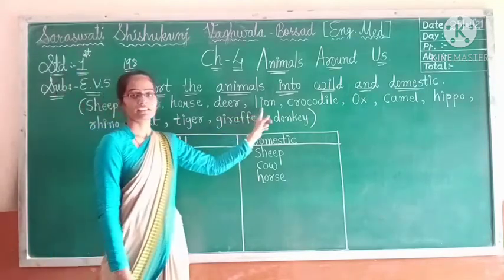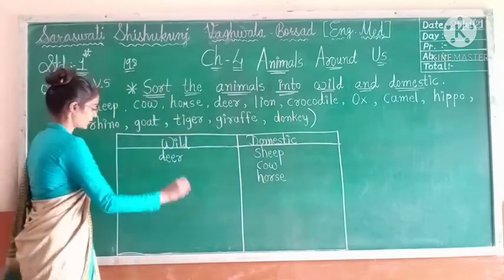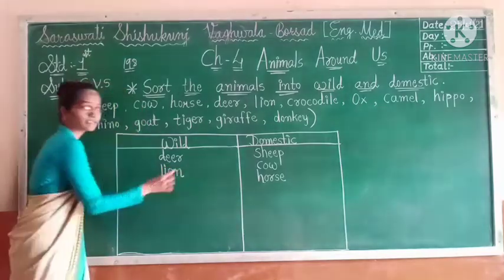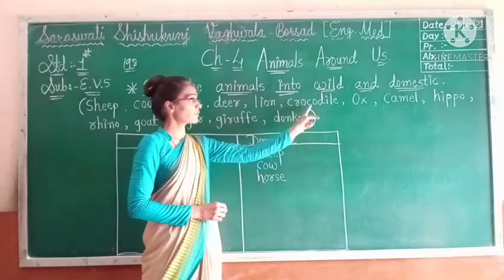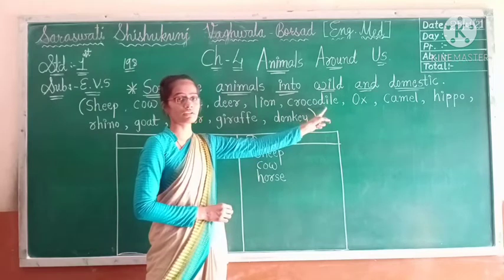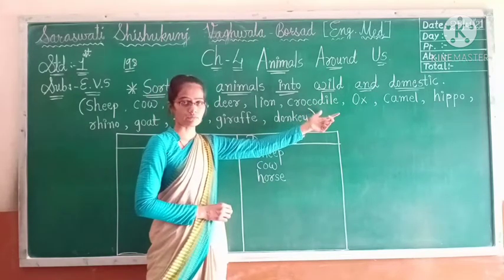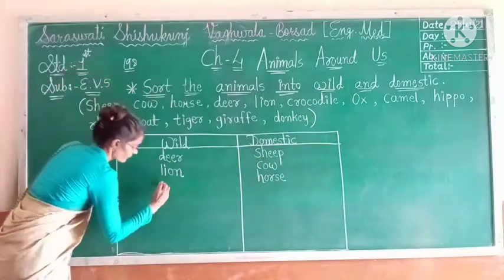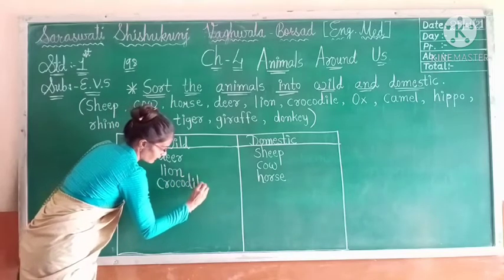Then after that is lion. Lion also comes under wild animals, so we will write lion here. Then after that is crocodile. Crocodile we also find in the forest — we do not find it in our surroundings. So it is called a wild animal, and we will write crocodile here under wild.